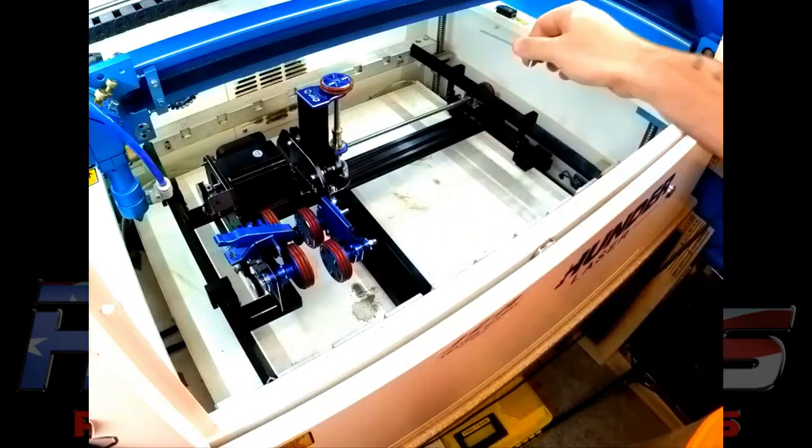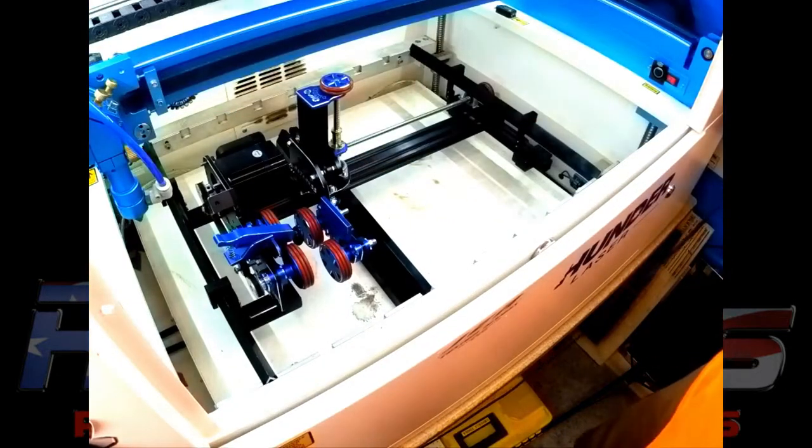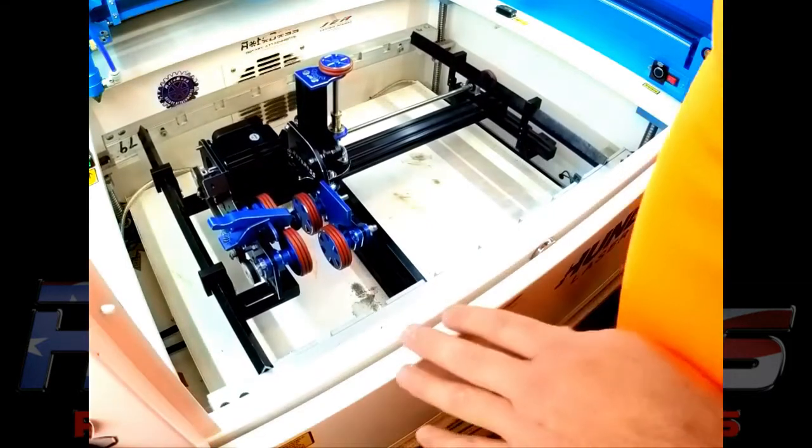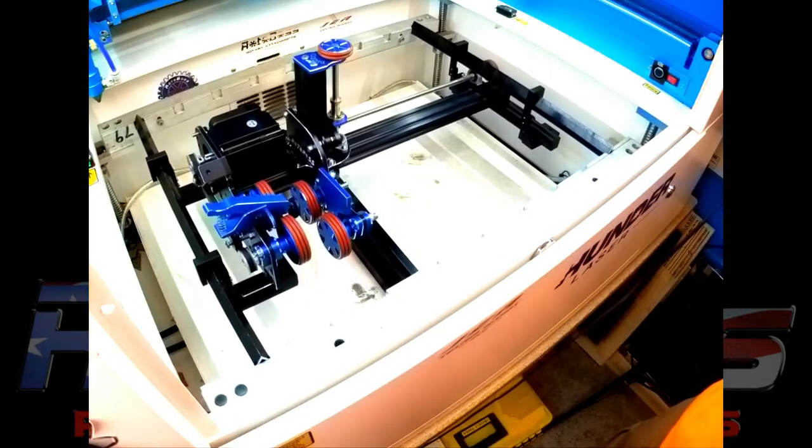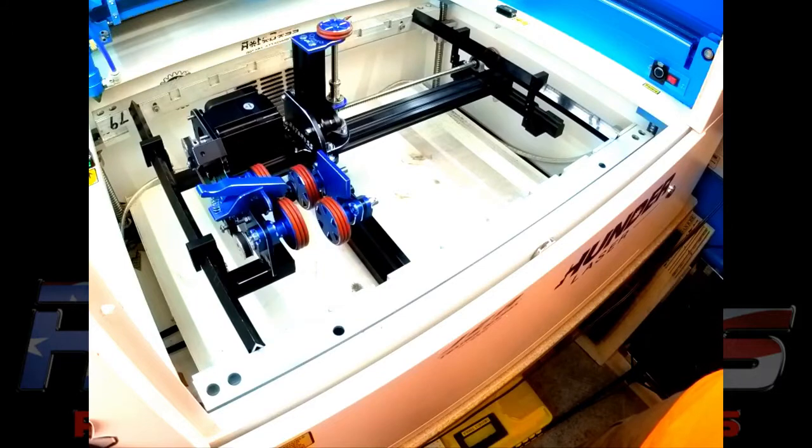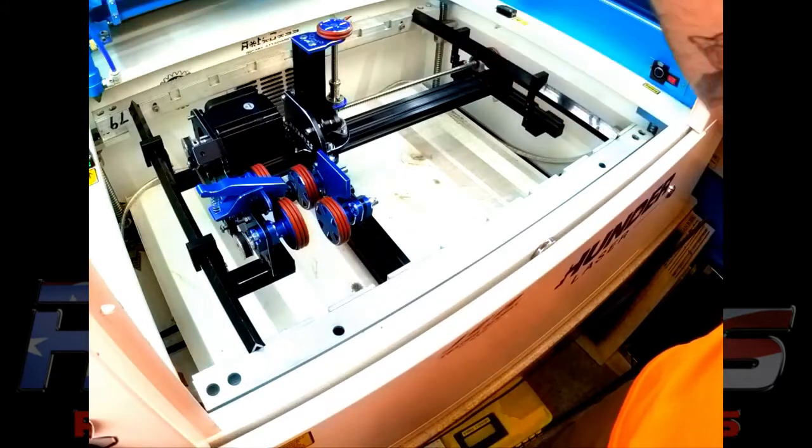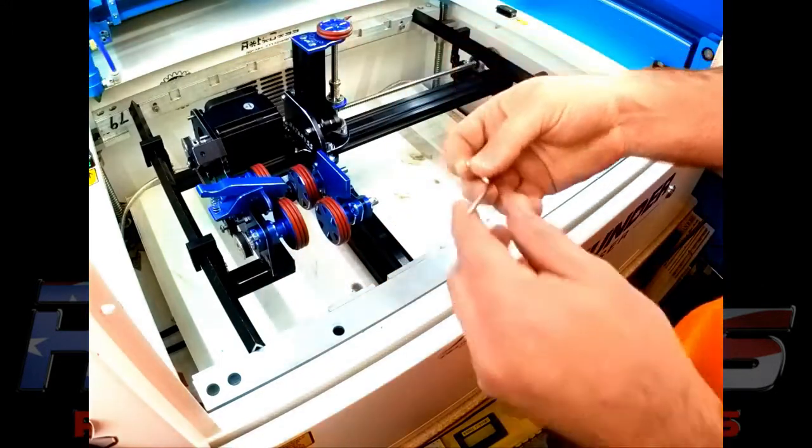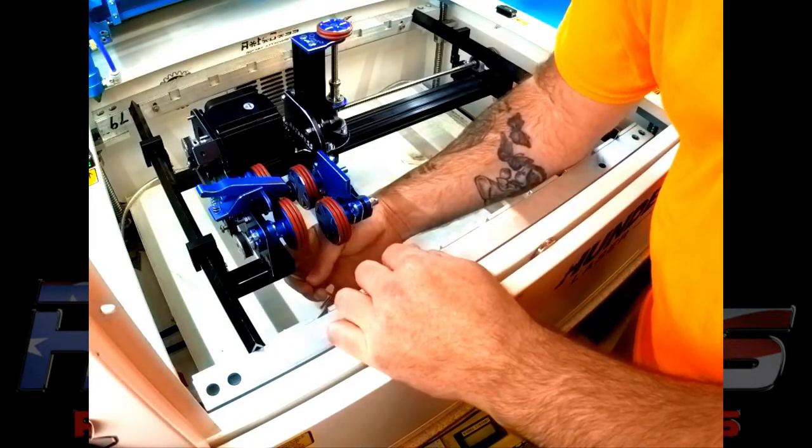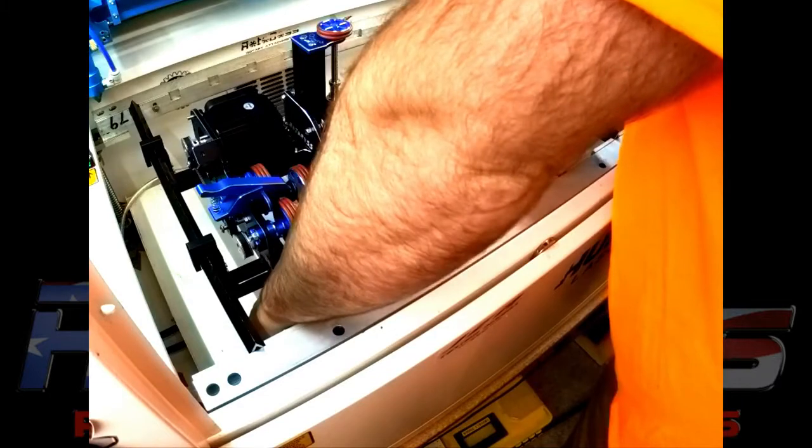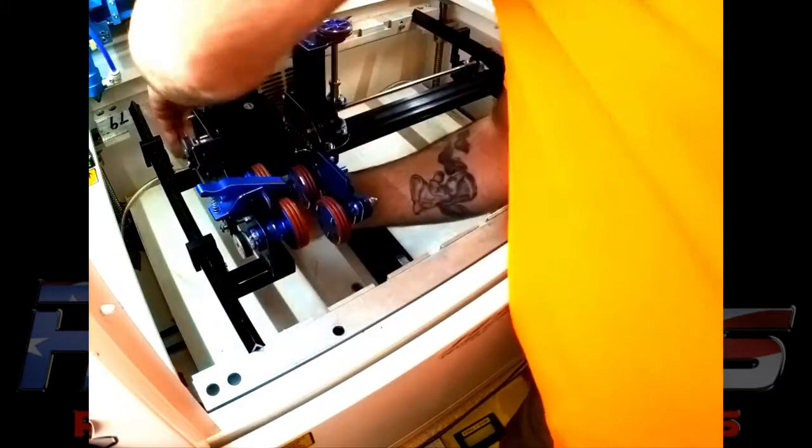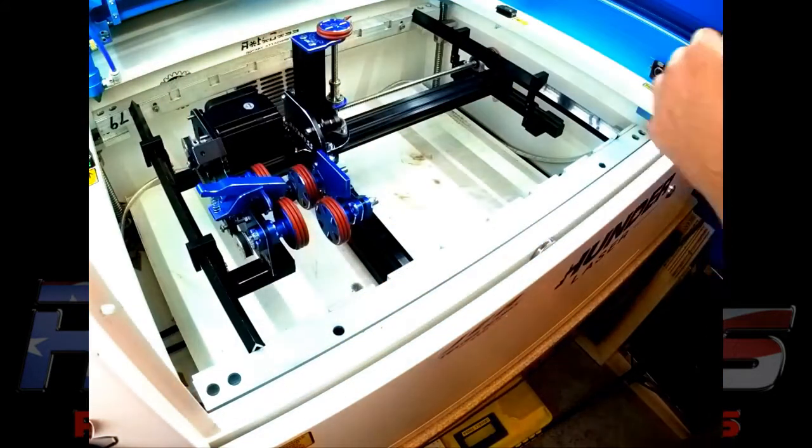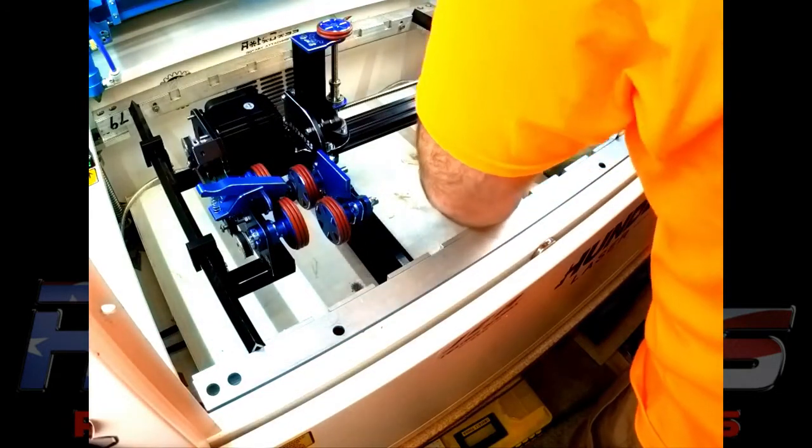Alright, once those are tight, you can do this two different ways really. You can raise the bed all the way up so you can reach them with a wrench. You take a 3mm wrench. Actually, I hit the auto focus stop. Come up underneath. Tighten it down. Tighten that one down. Once you get all four done, everything's locked into place.